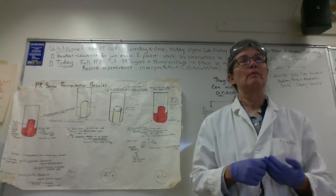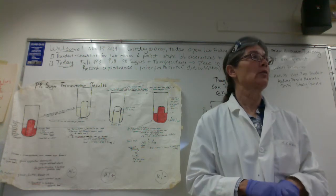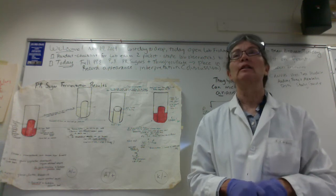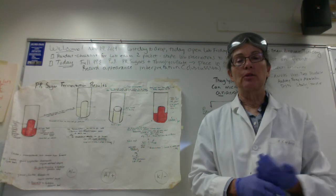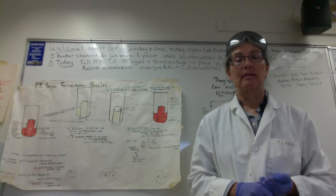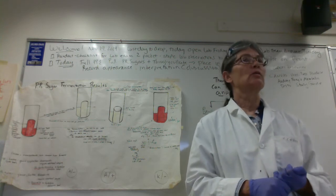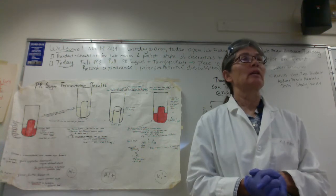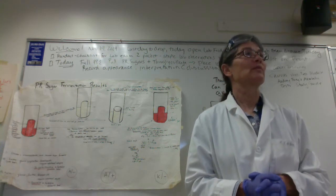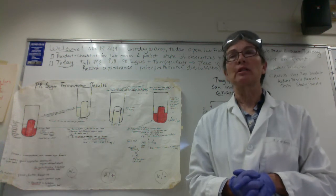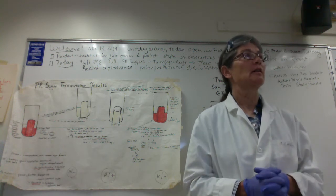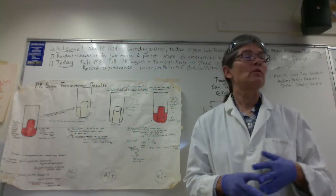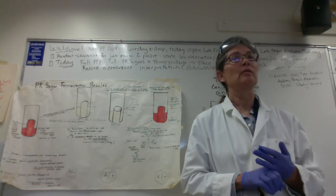The principle behind this is we're trying to answer the question: can my microbe ferment a specific sugar? And so what were the three sugars that we tested? Glucose, sucrose, and lactose. So folks, if a microbe is going to ferment a sugar, it's going to be glucose. Glucose is a monosaccharide — it's fed directly into glycolysis.